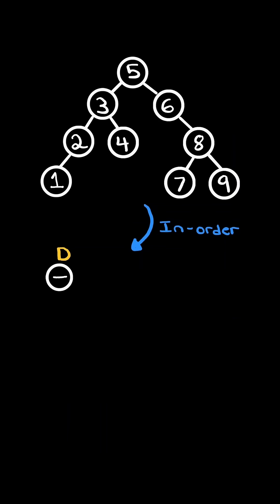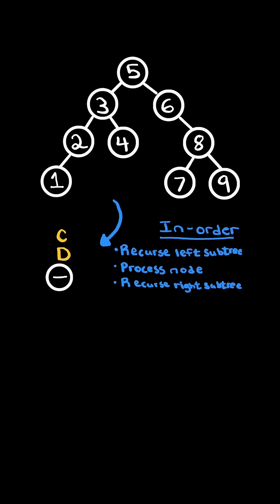First, we will create a dummy node, and we set the current node equaling the dummy node. In an inorder traversal, we first recurse on the left subtree, then we process the node, and finally recurse on the right subtree.